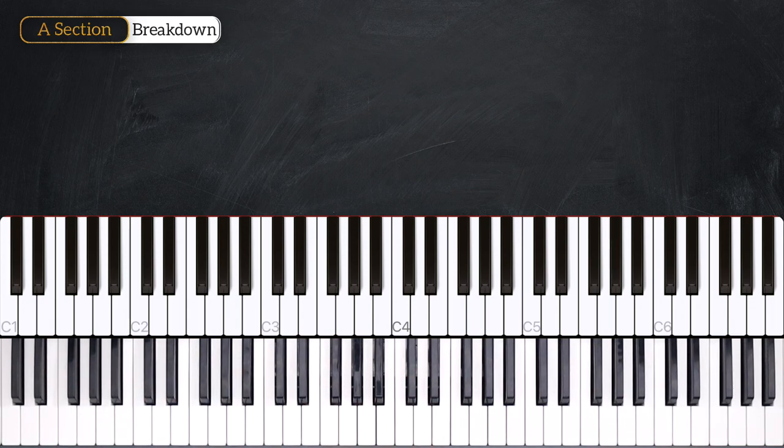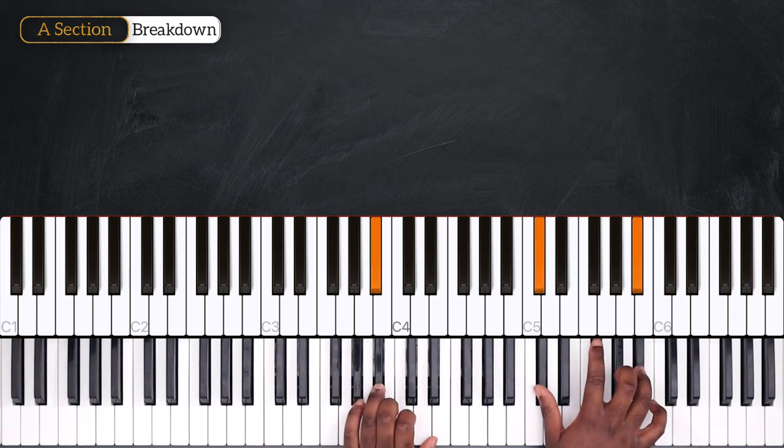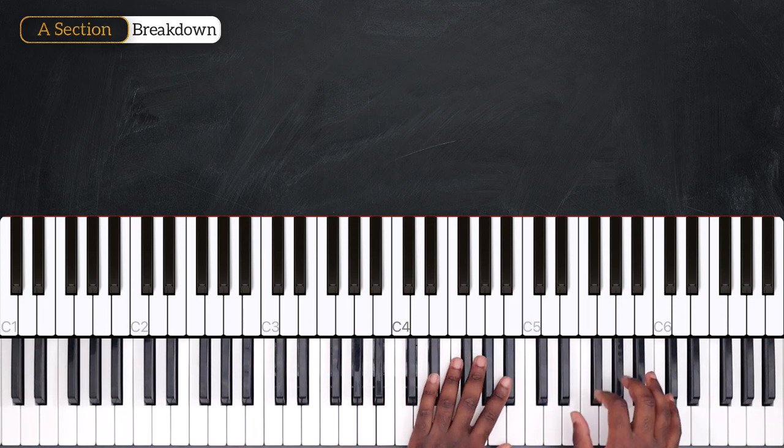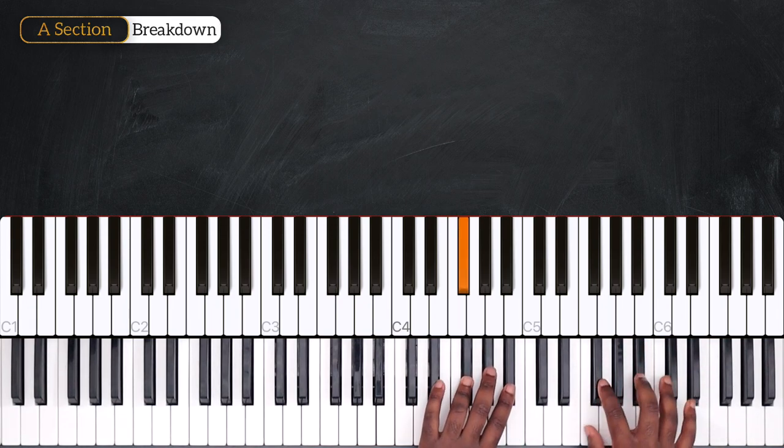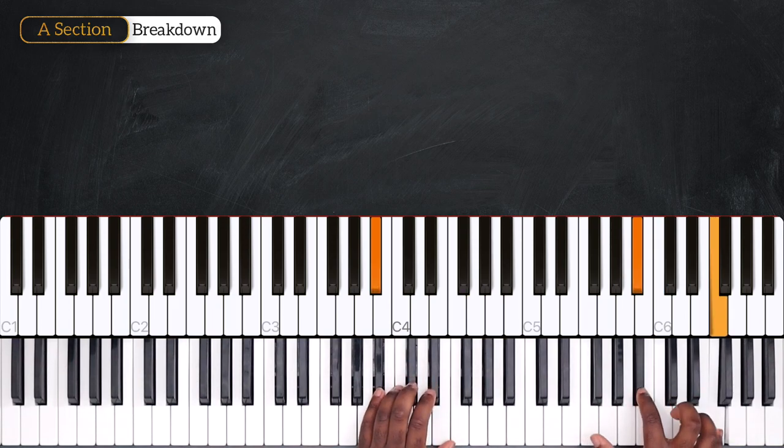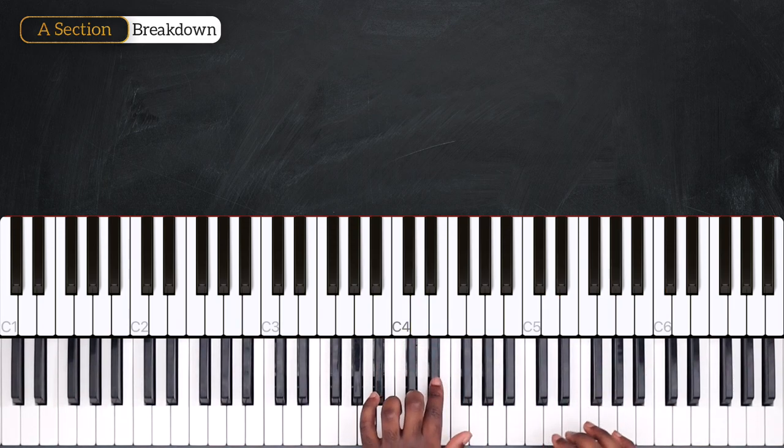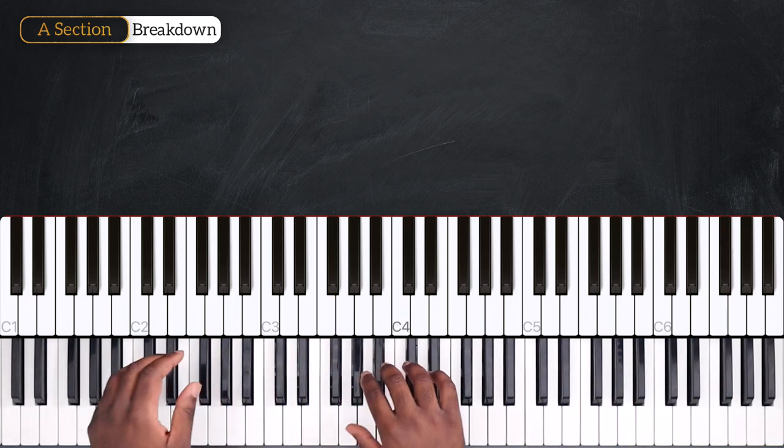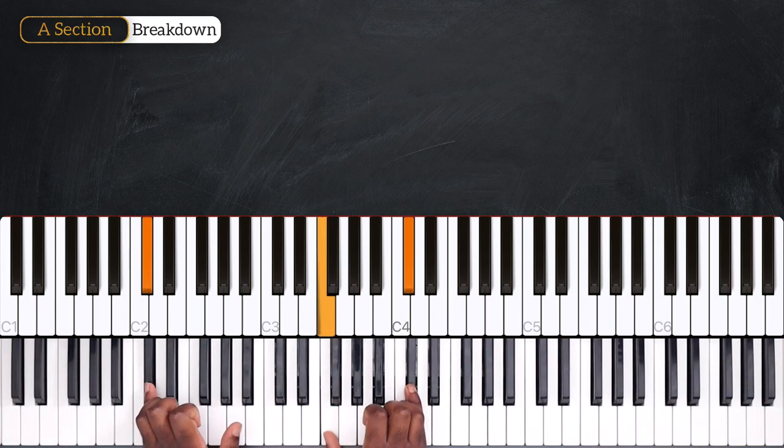Okay, let's replay this A section slow tempo. Three, four. And Eb. So just play and break in this Db major. All right, let's recap.